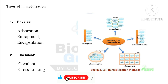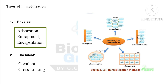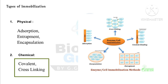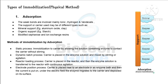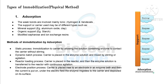Now, types of immobilization: basically two types — physical and chemical immobilization. In physical: adsorption, entrapment, and encapsulation are involved. In chemical: covalent and cross-linking are the subtypes. Let's discuss one by one.